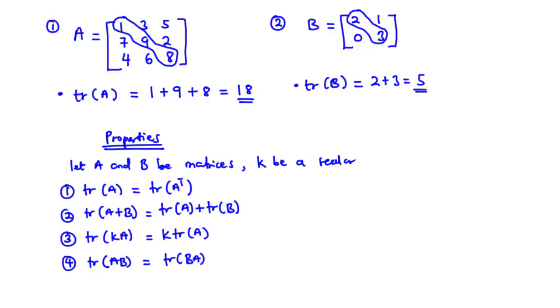Now what this primarily means is that the order of multiplication of the two matrices is not really important provided the two matrices can be multiplied. In that case you have the trace of matrix AB to be equal to the trace of matrix BA.